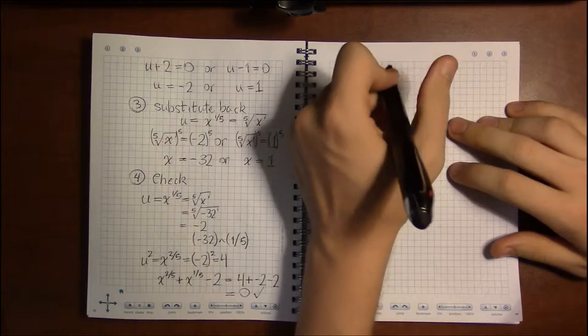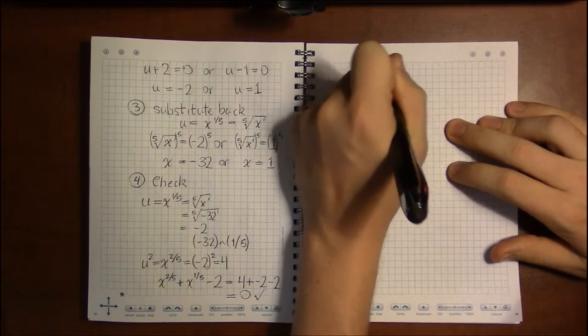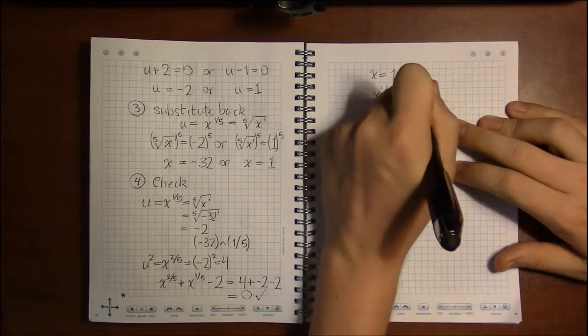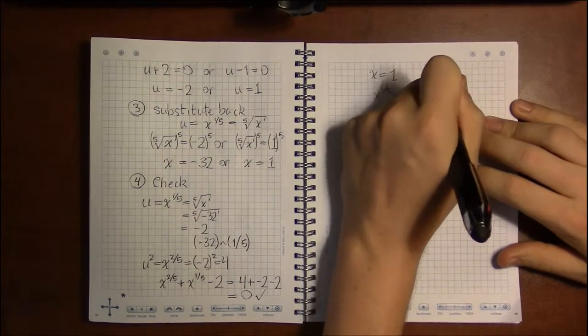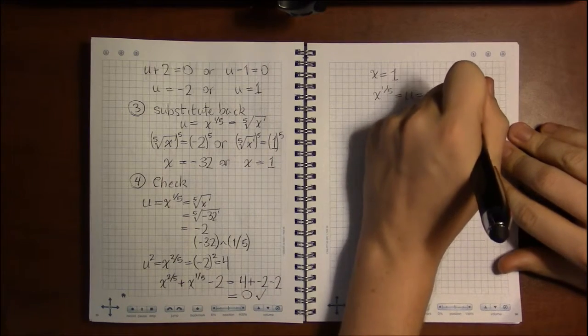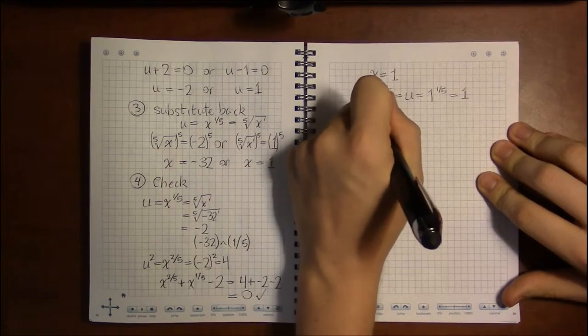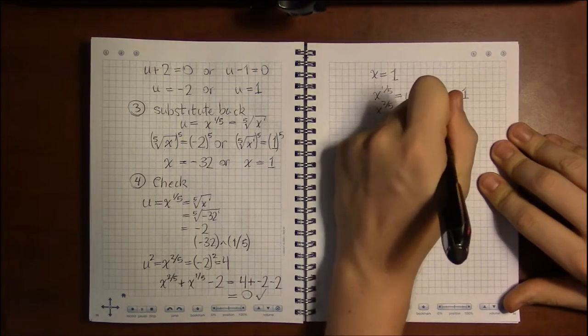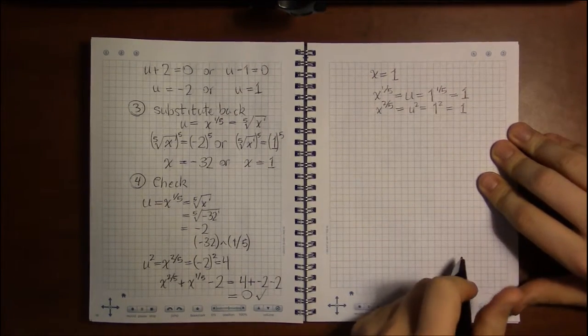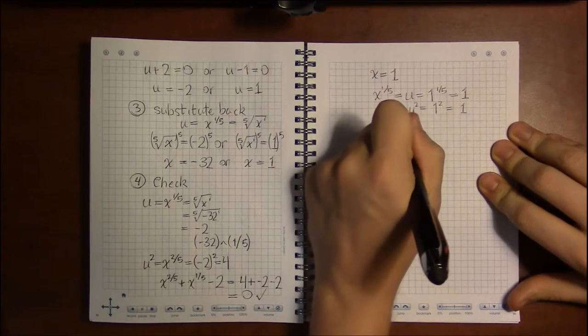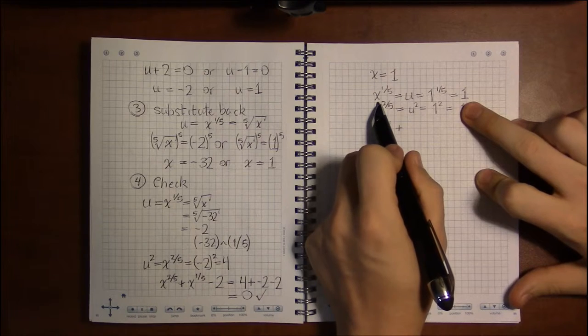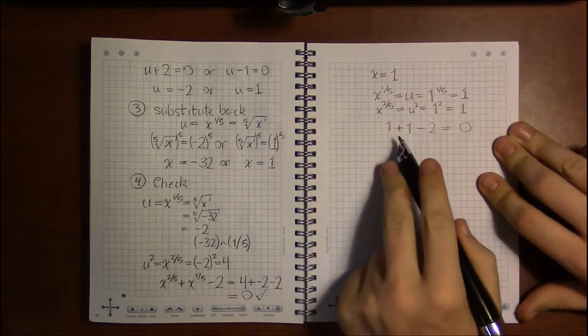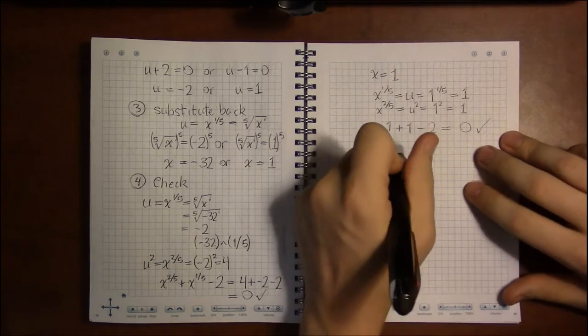And then if we check the case when x equals 1, well, if x equals 1, then x to the one-fifth, or what we called u, would just be 1 to the one-fifth, or the fifth root of 1. And 1 to any power is just 1. Then x to the two-fifths, which we called u-squared, is just going to end up being 1 squared, which is also 1. So our equation will be 1, x to the two-fifths, plus x to the one-fifth, which in this case is 1, then minus 2. And 1 plus 1 is 2, so this is going to end up being 0. So in this case, there was really nothing to worry about.